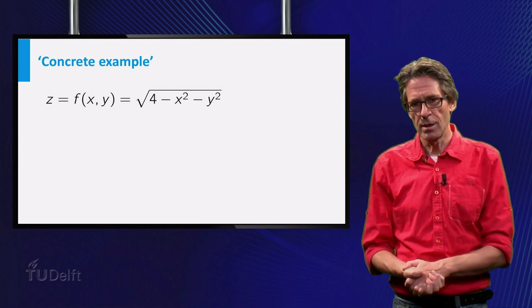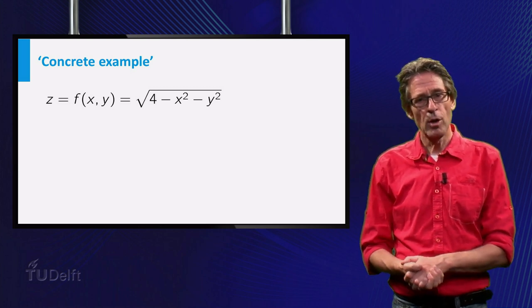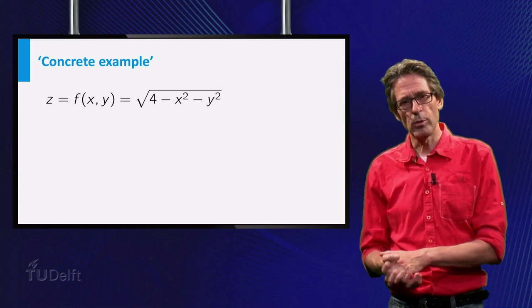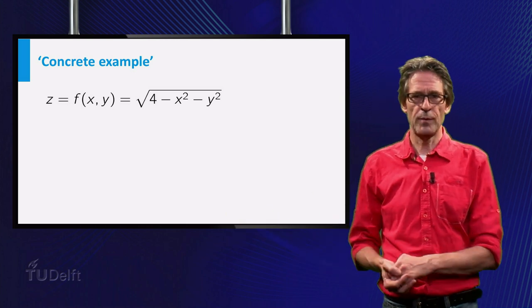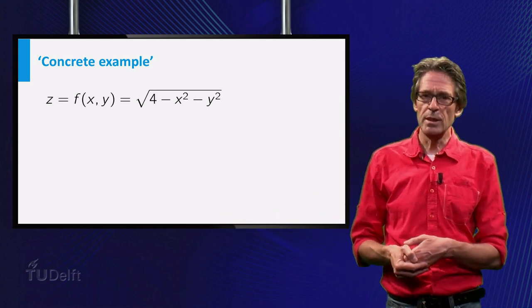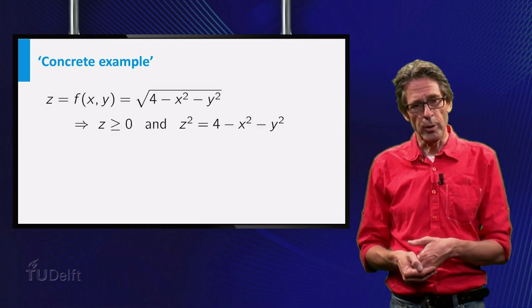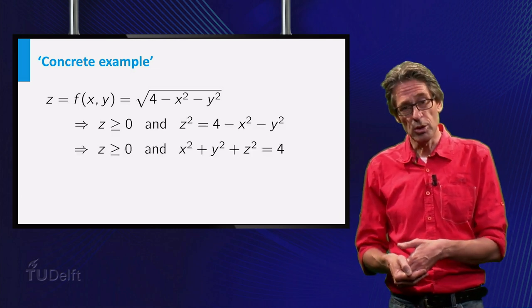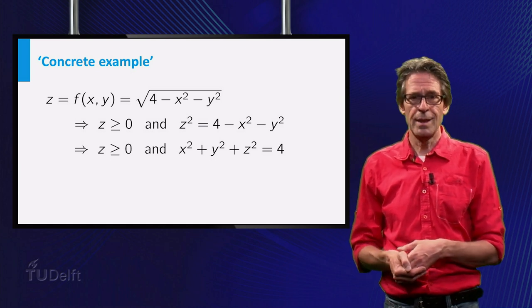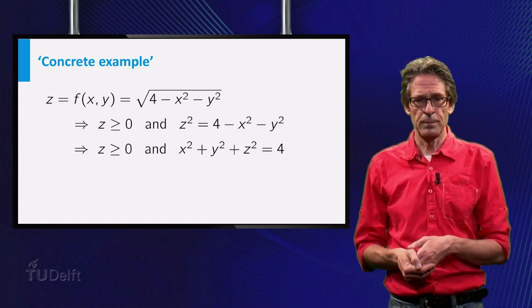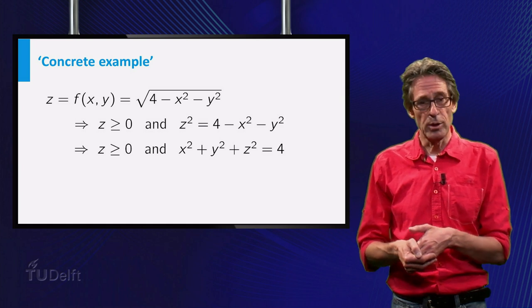Next, note that the point (x, y, z) lies on the graph of f only if z equals the square root of 4 minus x squared minus y squared. This means that z must be non-negative, and if you square you will find that x squared plus y squared plus z squared equals 4. This is the equation of a sphere.